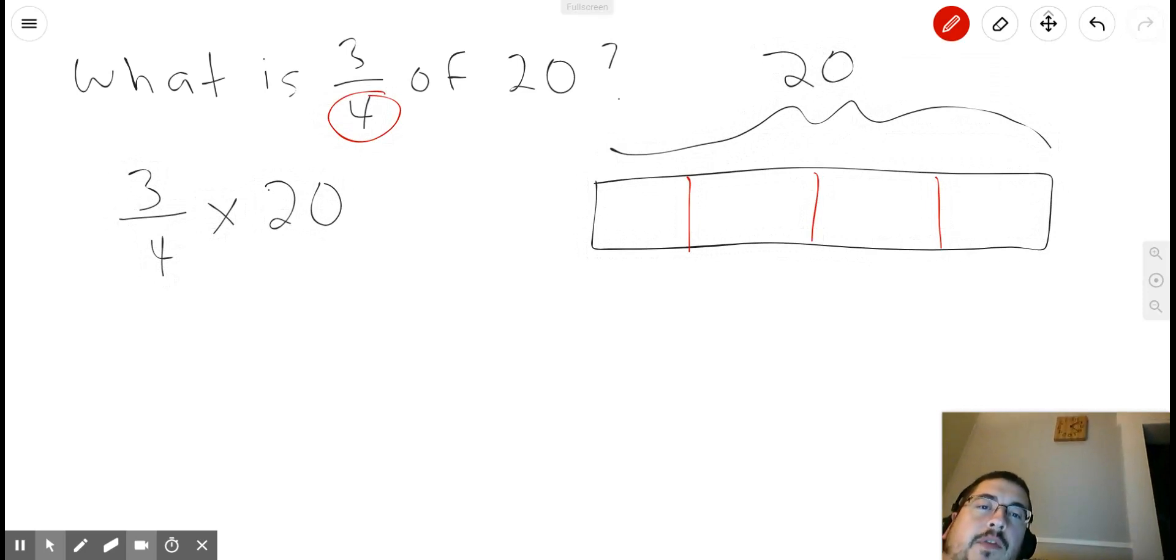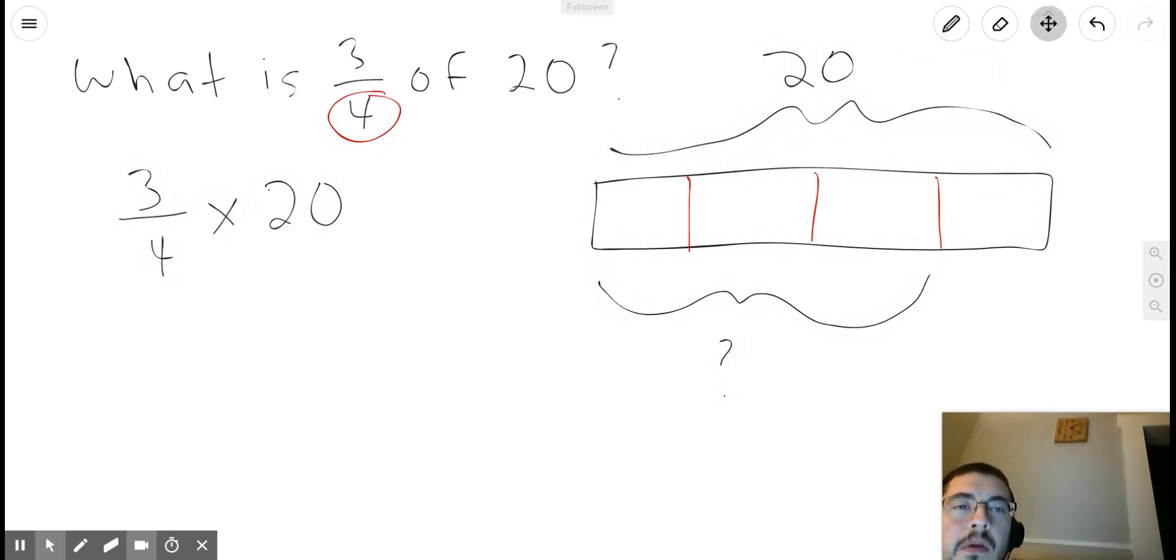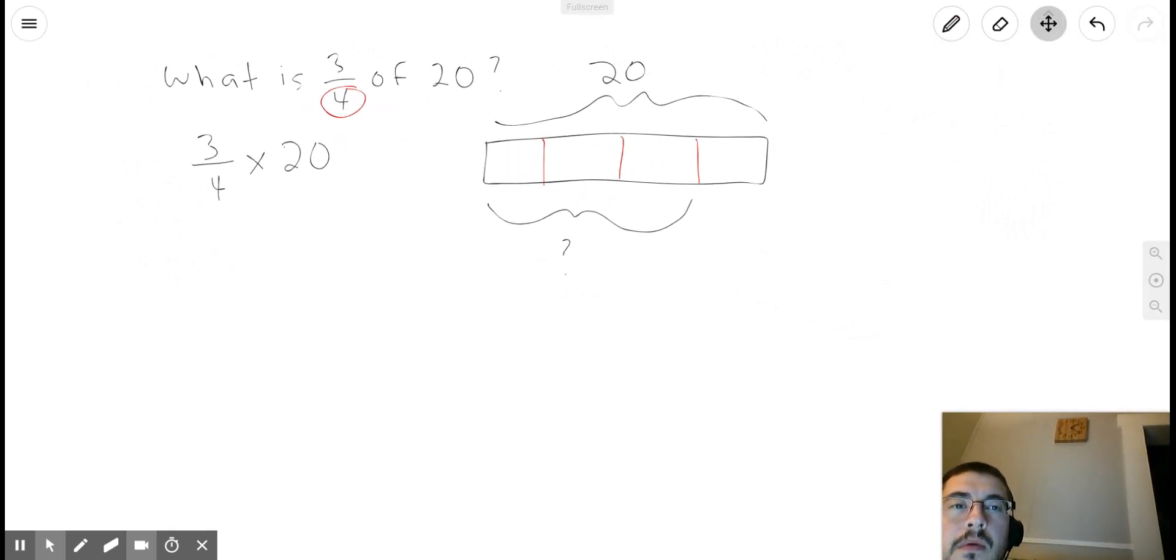All right, and so now we need to figure out what three-fourths, or three of the four units equals, if four of the units equals 20. So four units is equal to 20. And in order to figure out how much three units would be worth, we need to figure out what one unit would be worth.